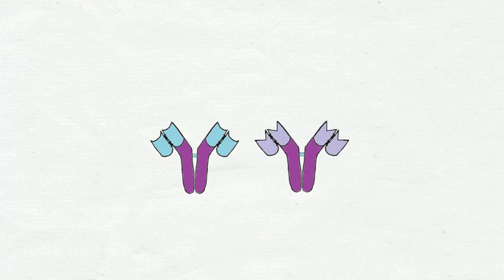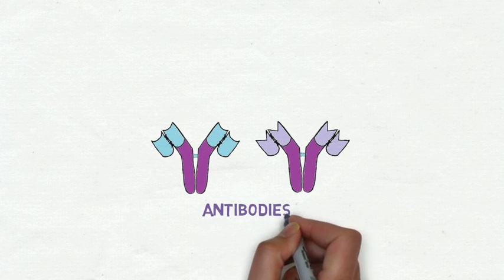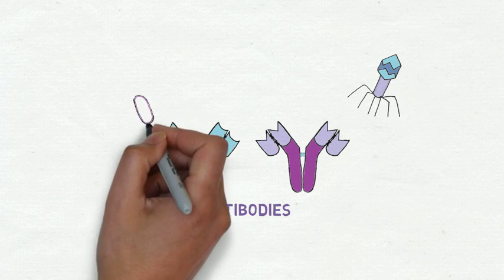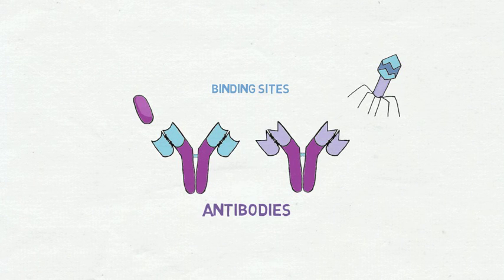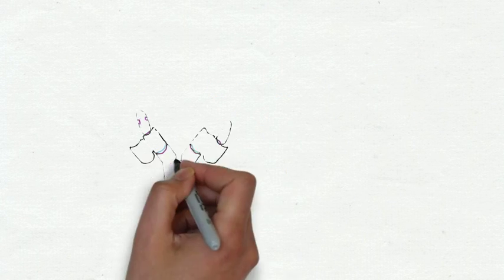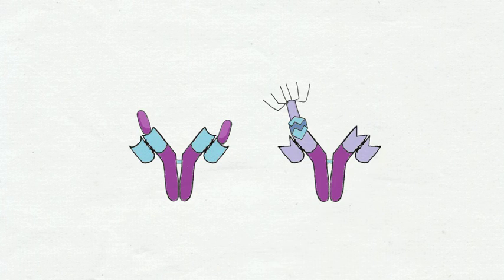The immune system produces large proteins called antibodies that recognize invaders such as viruses or bacteria. Antibodies have very specific binding sites that recognize pieces of these invaders. When an antibody comes across something foreign to your body, it binds to it and prevents you from getting sick.